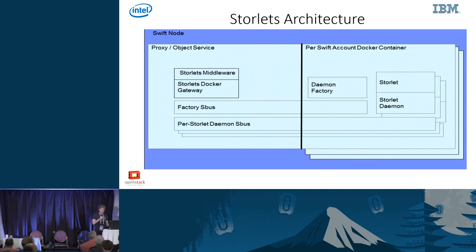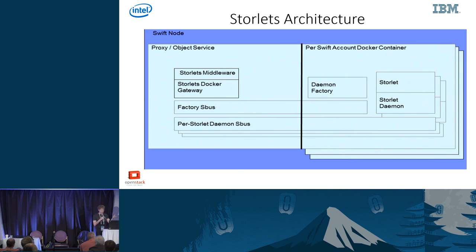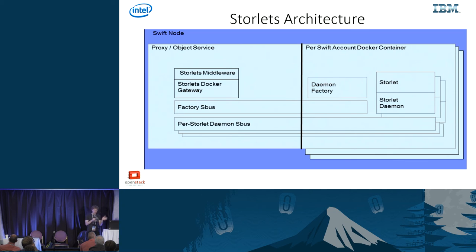The more detailed Storelet architecture: we have a Docker container per Swift account, and that's how we achieve multi-tenancy and security. We need a communication mechanism between the Swift system and Docker — potentially on a different system. We have the Storelets middleware itself, and then buses and domain sockets to send commands, messages, and data — the input stream and file descriptors — between the Swift proxy or object server and wherever your Docker container resides.